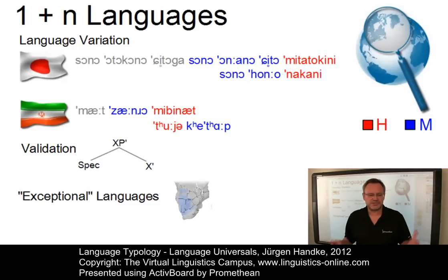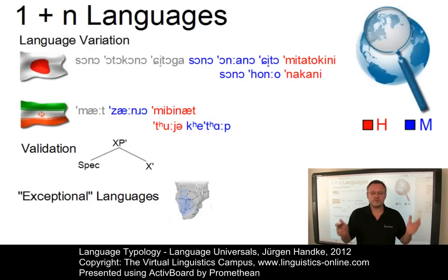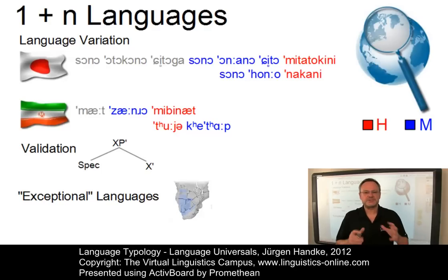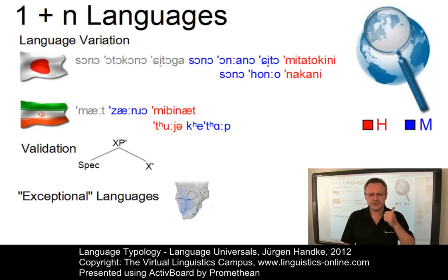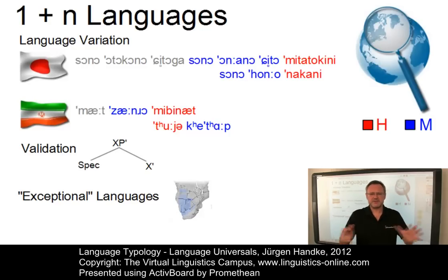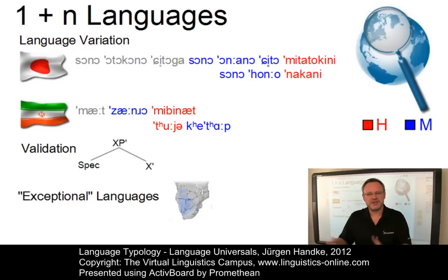Finally, we have languages which we might call exceptional. The one-language approach may ignore interesting properties that may not be included even within a comprehensive sample. For example, click consonants as regular phonemes are restricted to Khoisan and neighboring Bantu languages in southern Africa — how can they become part of universal statements in a one-language approach? Thus, detailed work on language universals needs a representative sample defined by the absence of genetic biases, areal biases, and typological biases — any language family, any region, and any language type should be included.